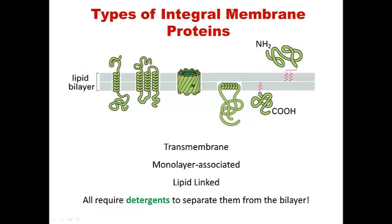There are actually many types of integral membrane proteins, all of which require detergents to separate them from the bilayer. These proteins can be transmembrane through a single-pass alpha helix, through multiple alpha helices, or through structures called beta barrels — a series of beta sheets that form a barrel, which frequently form pores within the membrane. There are also integral membrane proteins that associate with only one leaflet of the bilayer, and lipid-linked membrane proteins that have lipid anchors embedded within the bilayer, which are covalently bonded to the protein itself.